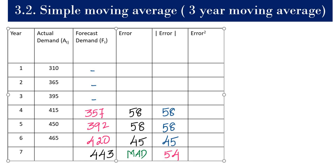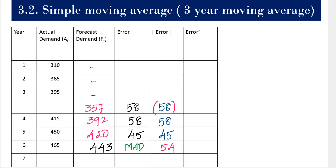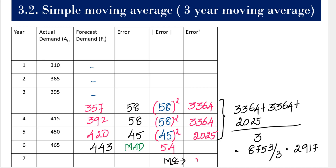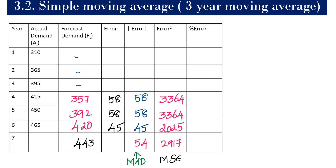For the Mean Square Error (MSE), we square each error: 58 squared is 3364, 58 squared is again 3364, and 45 squared is 2025. Summing these: 3364 plus 3364 plus 2025 divided by 3 gives us 8753 divided by 3. The Mean Square Error is approximately 2917.